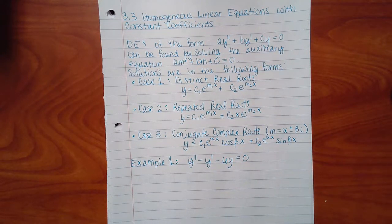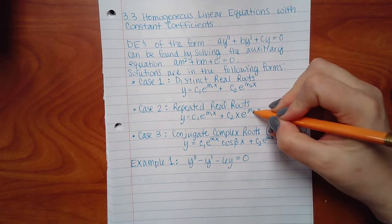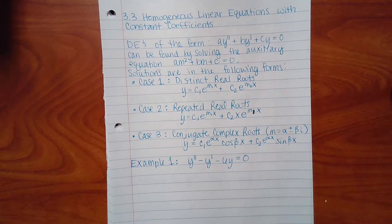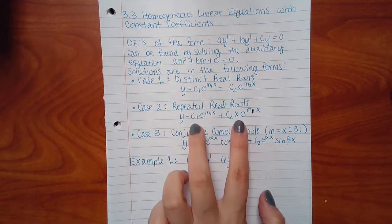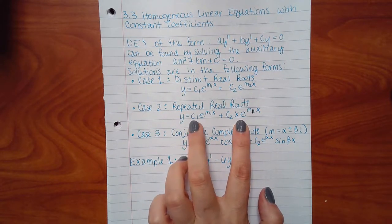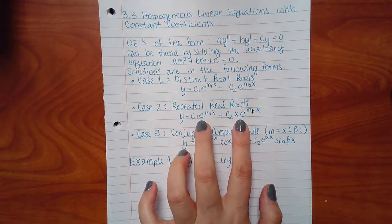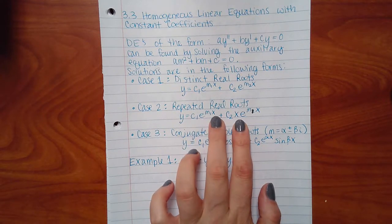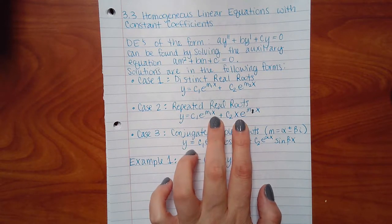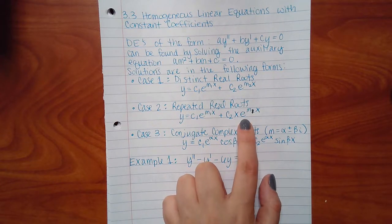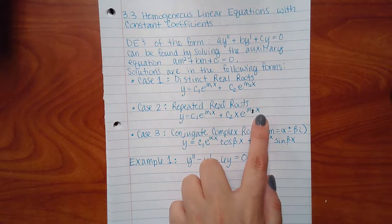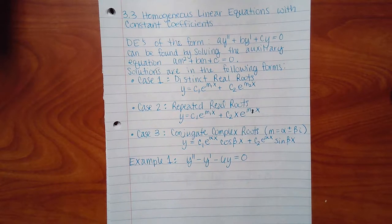For Case 2 — repeated roots — the two solutions are the same number, so we can't use the same form twice. The difference is that the first term is c₁ e to that root times x, but the second term has an extra x in front: c₂ x e to the same root times x. That x is what distinguishes the two terms.